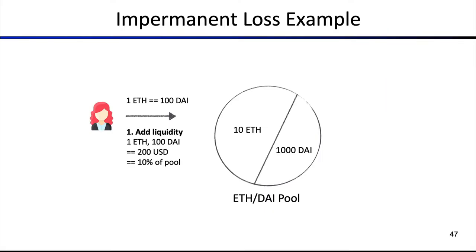In the following example, we have an ETH/DAI pool. There's a liquidity pool, and we have Alice who can basically add liquidity to this pool. At the current state, the exchange rate between ETH and DAI is 1 to 100 DAI. So she's doing an add liquidity operation — she's adding one ETH and 100 DAI, in equal proportions. In total, it's 200 USD, so she's owning 10% of the pool as a liquidity provider.